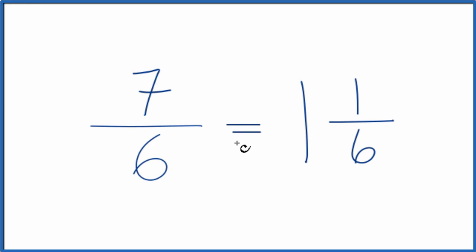And the fraction 7 over 6, that equals the mixed number 1 and 1/6. You can check that. 1 times 6, that's 6. 6 plus 1 is the 7. Then we just keep the denominator the same.